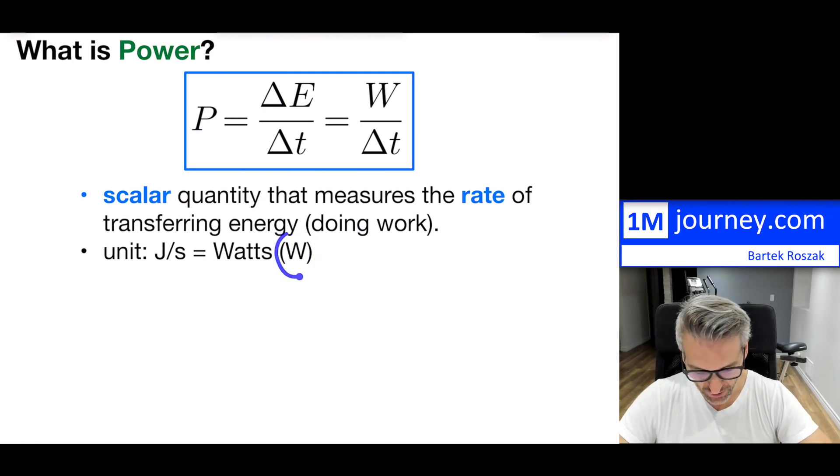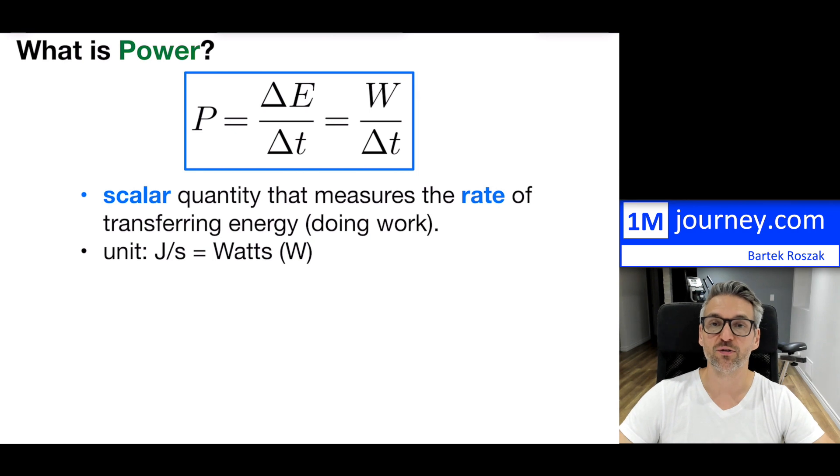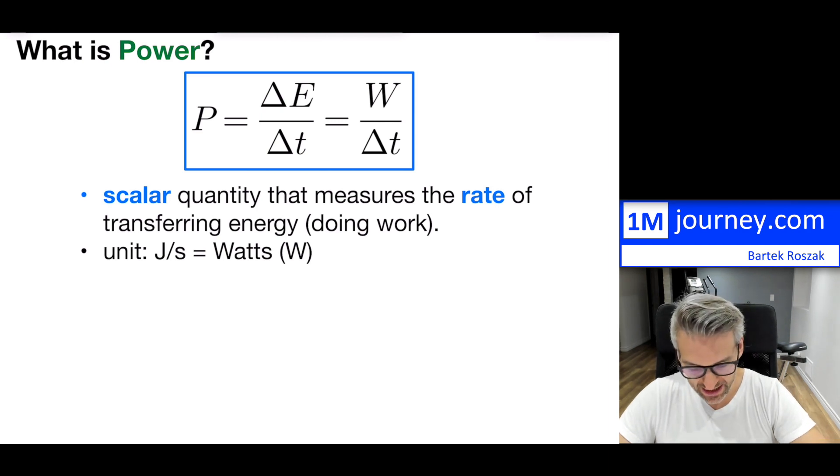When you're taking in the energy, the standard unit was joules, and the standard unit for time in SI units is seconds. Therefore, the actual units for power is joules per second. That joules per second is now kind of named and we're changing it. Instead of using joules per second, we use watts, designated with a capital W.